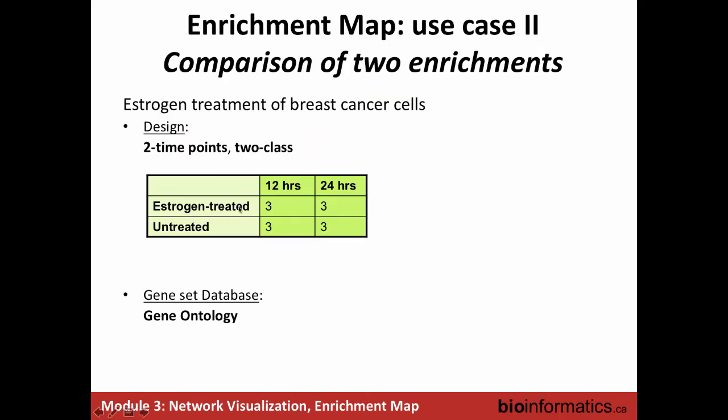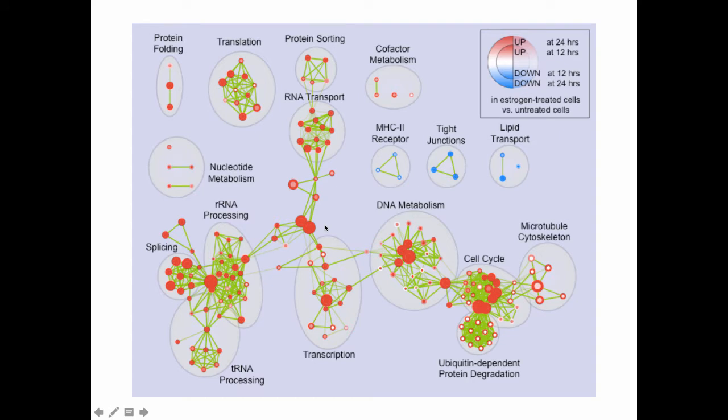Here we have two time points. This is actually four different conditions - A and B at 12 hours, A and B at 24 hours. For each time point we did an enrichment analysis, treated versus untreated at 12 hours, treated versus untreated at 24 hours. We got two GSEA results and wanted to compare them. We used the visual properties in Cytoscape to show this, where the center of the node represents the early time point and the border represents the late time point. Many of the pathways are up and down at both early and late.